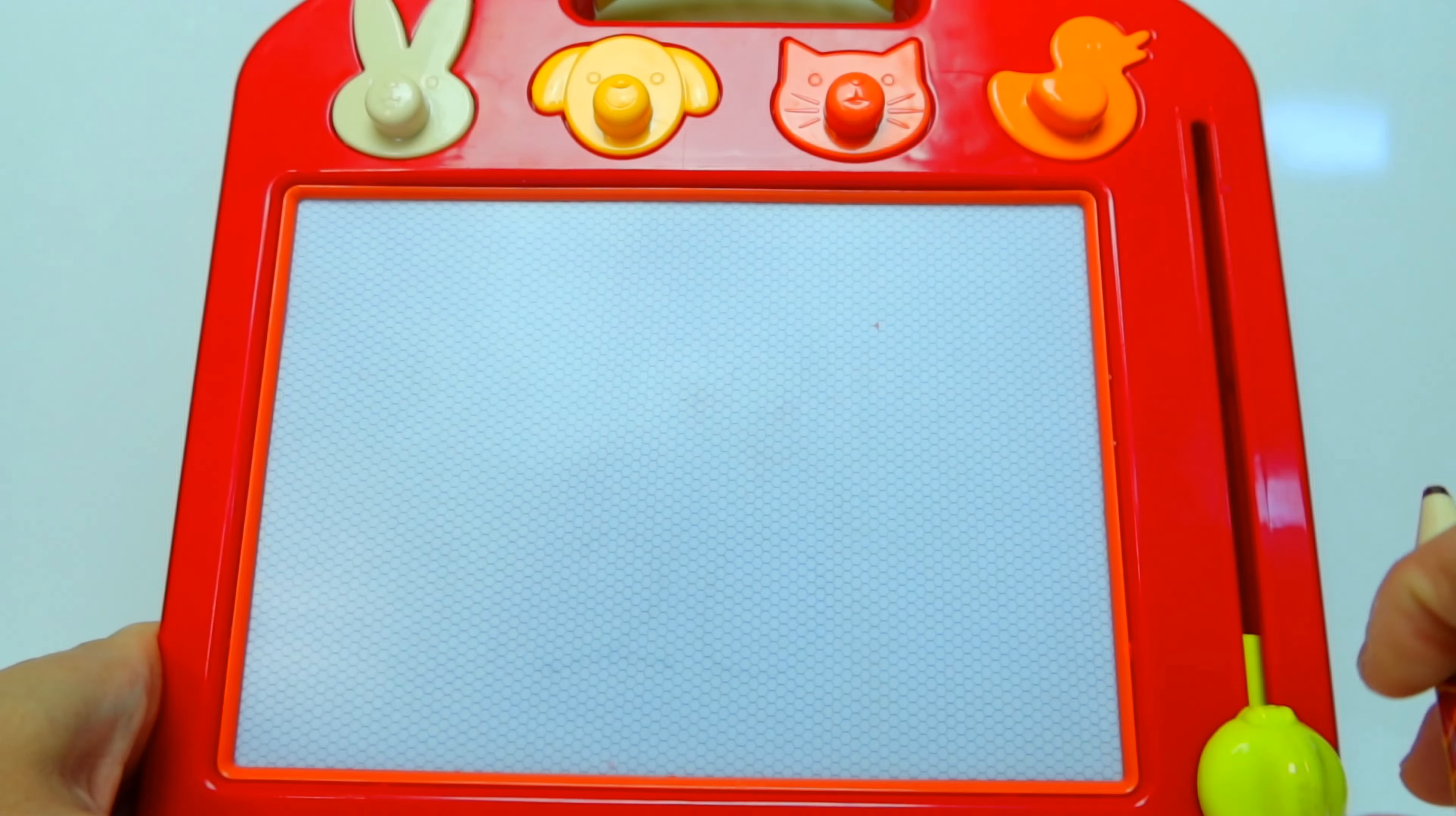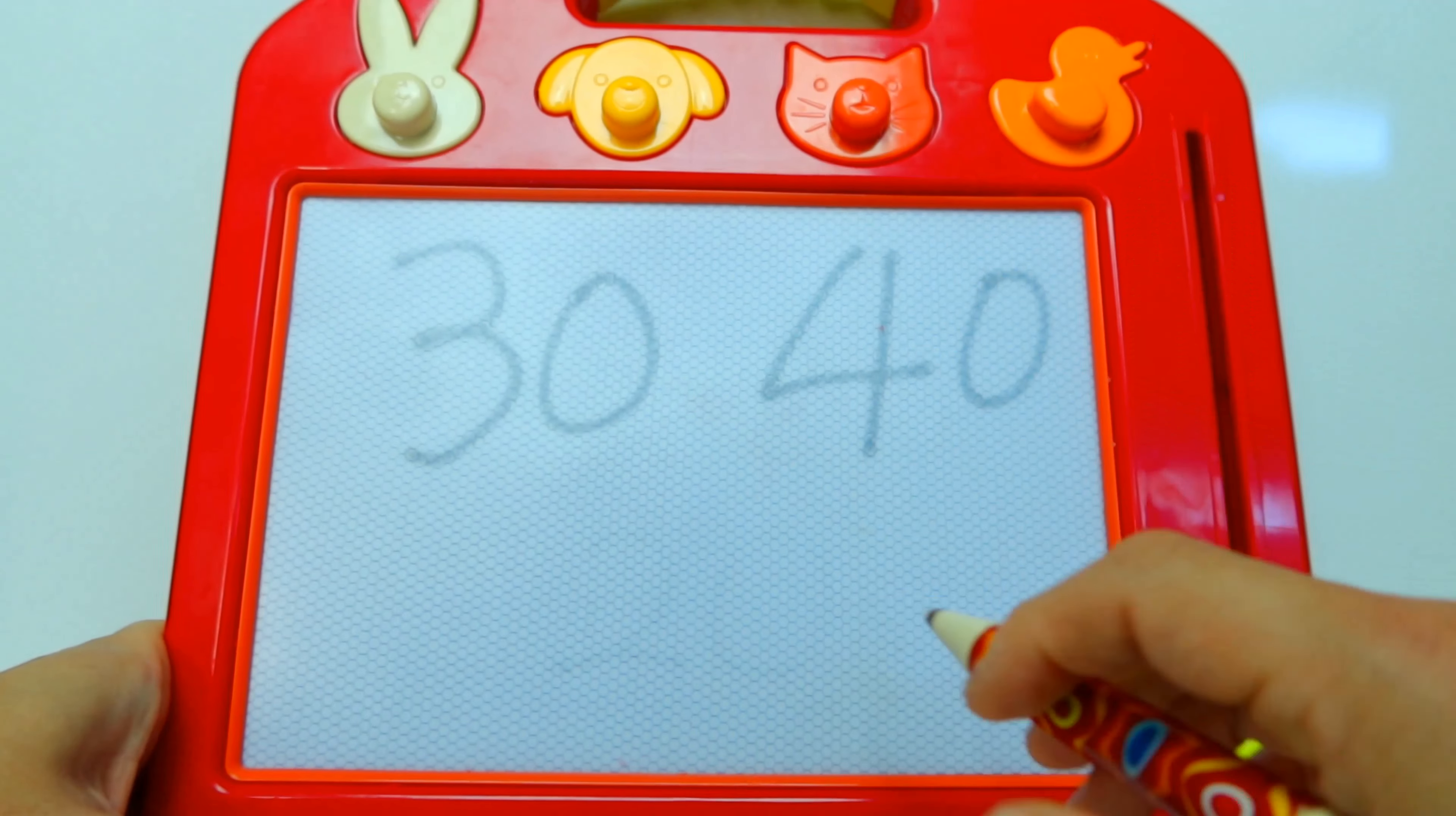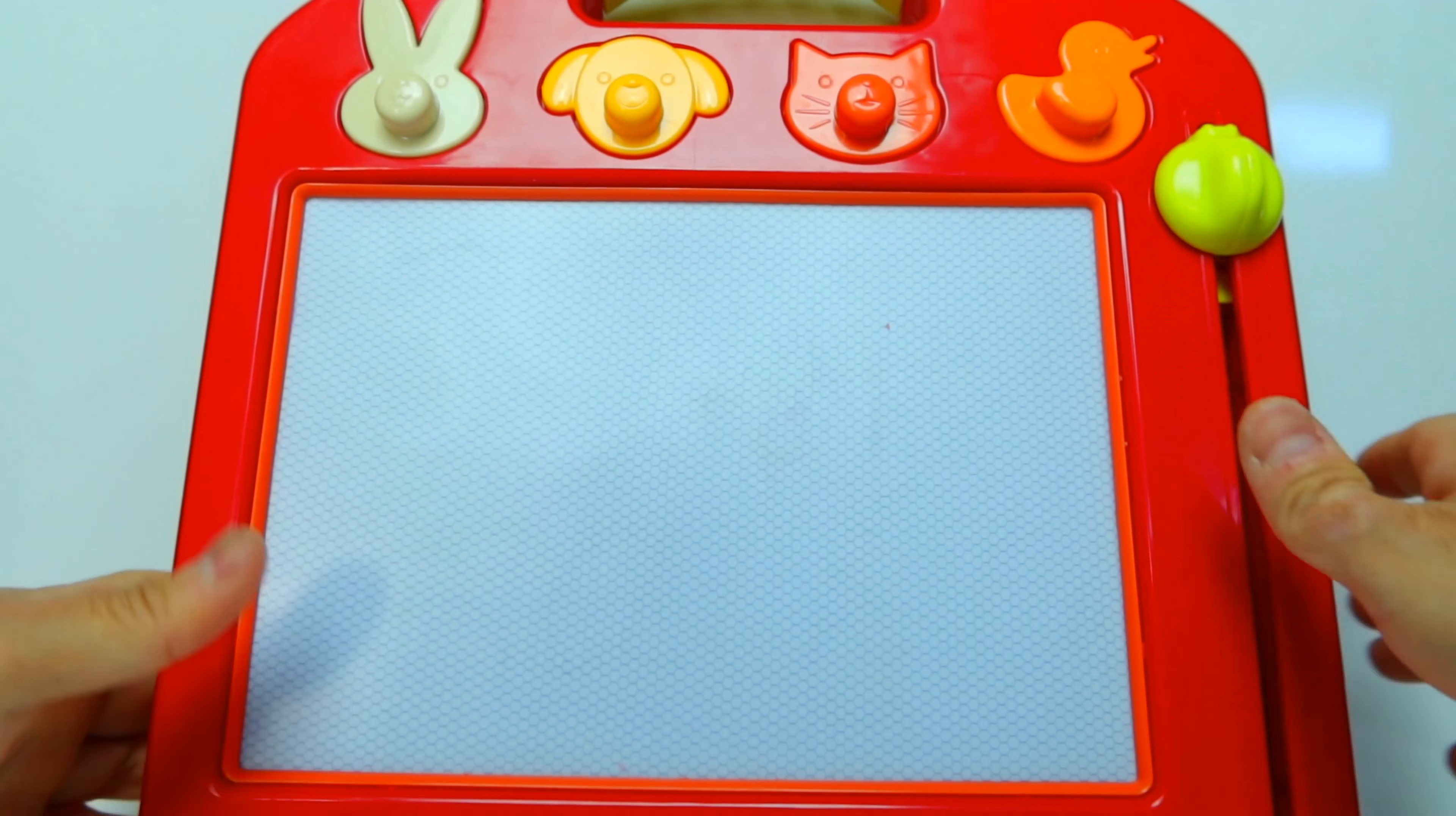Now we're gonna go with ten up on each number, so we're gonna have thirty, twenty, forty, fifty, fifty, and sixty. Yes, you guys are doing a great job!